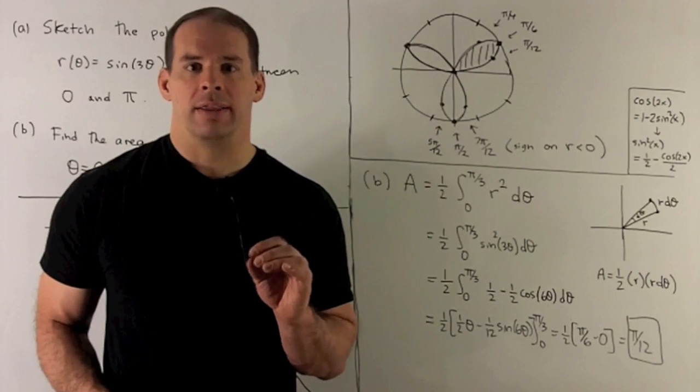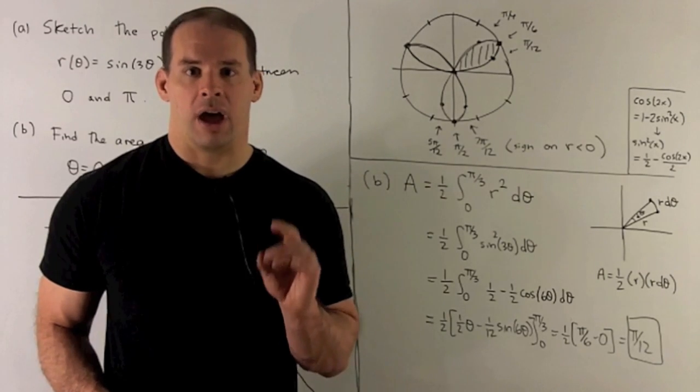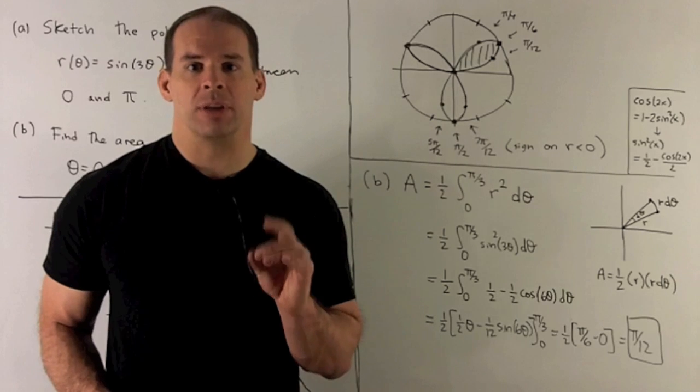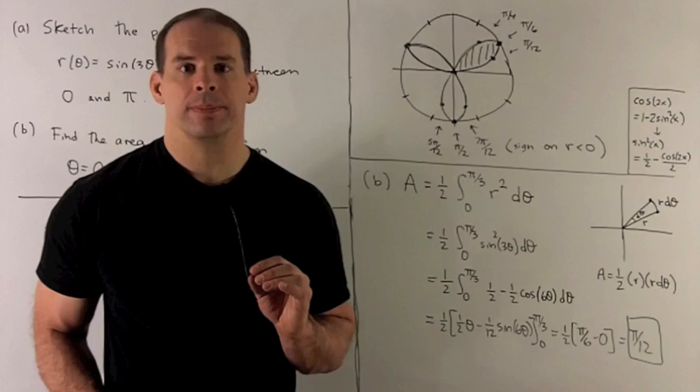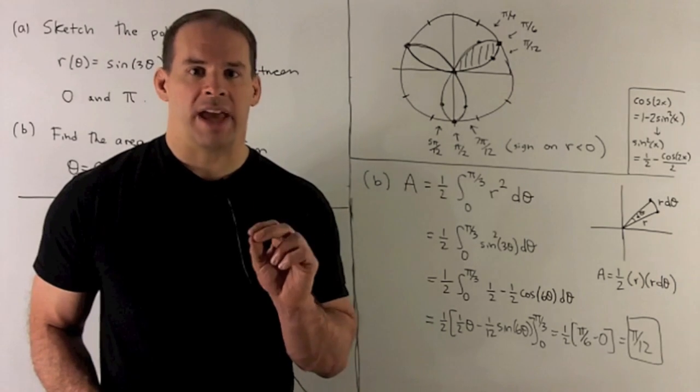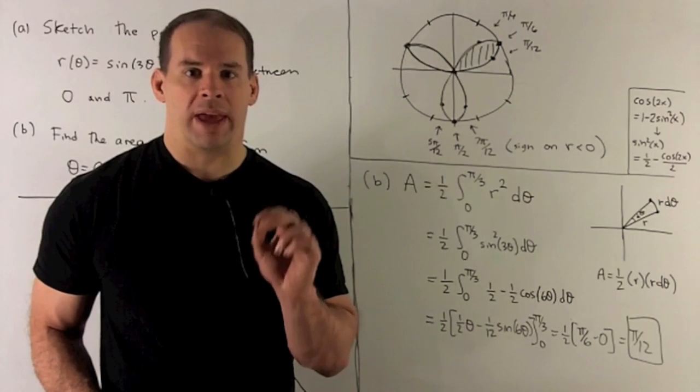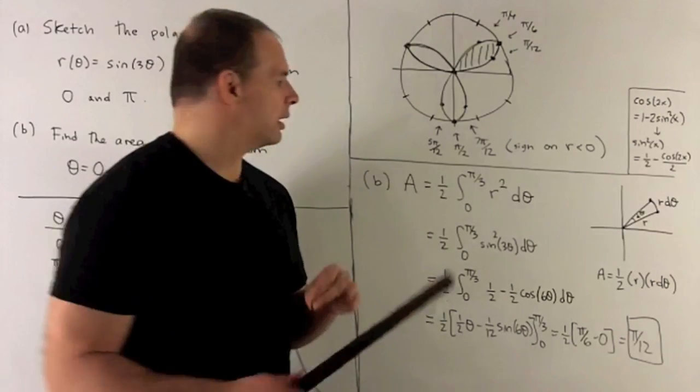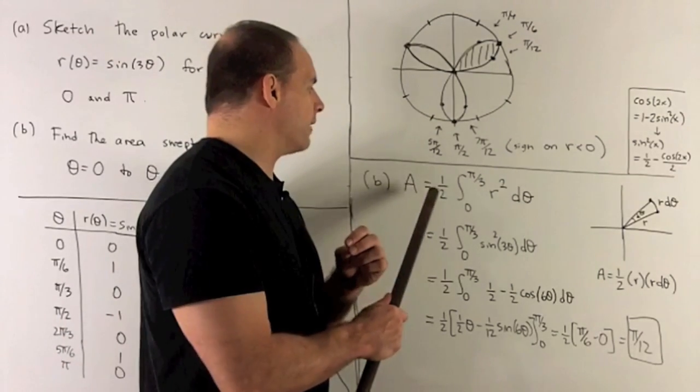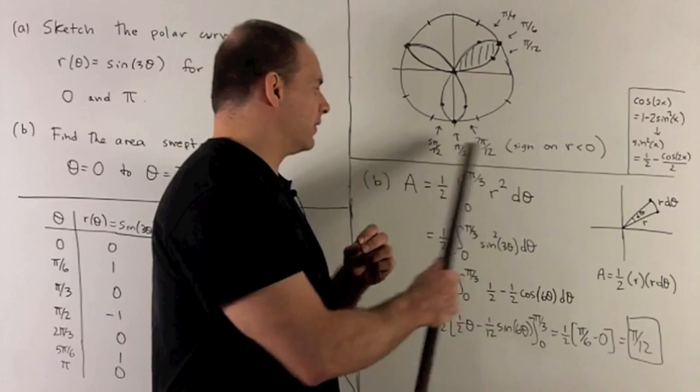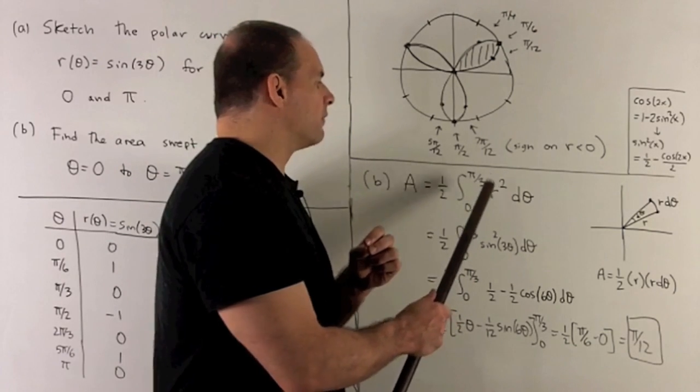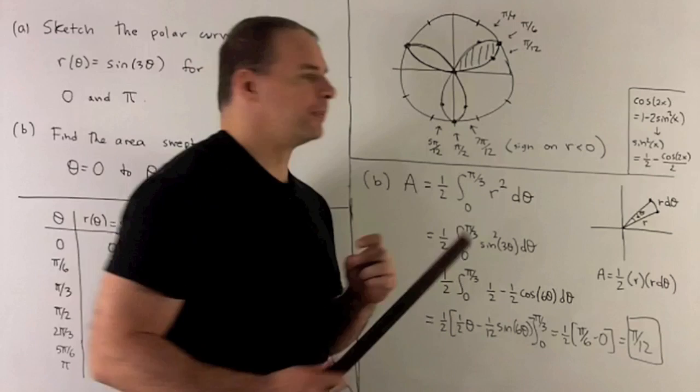Next part, let's find the area of the first petal. That's going to be between θ = 0 and θ = π/3. We write down our formula for the area when we have a polar function. It's going to be A = 1/2, angle one to angle two, we're going to take the definite integral, and that's going to be of r² dθ.